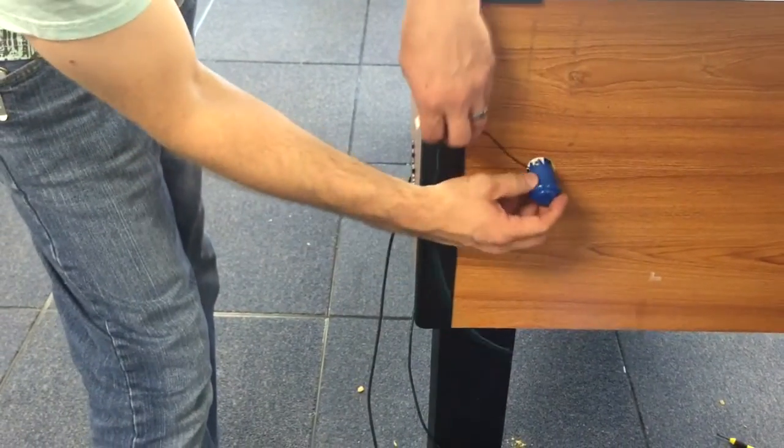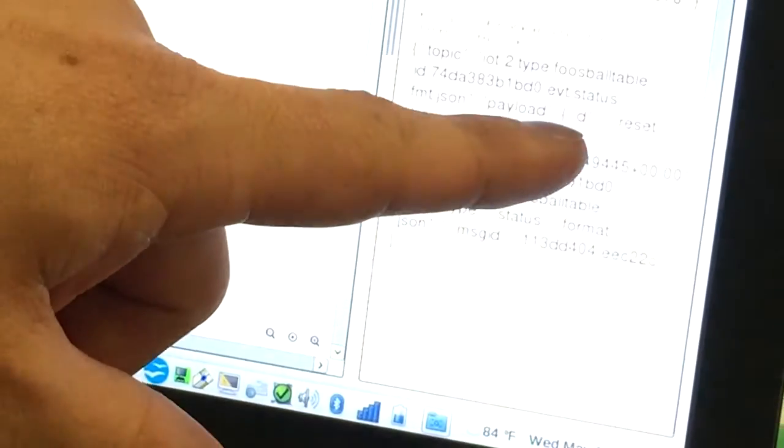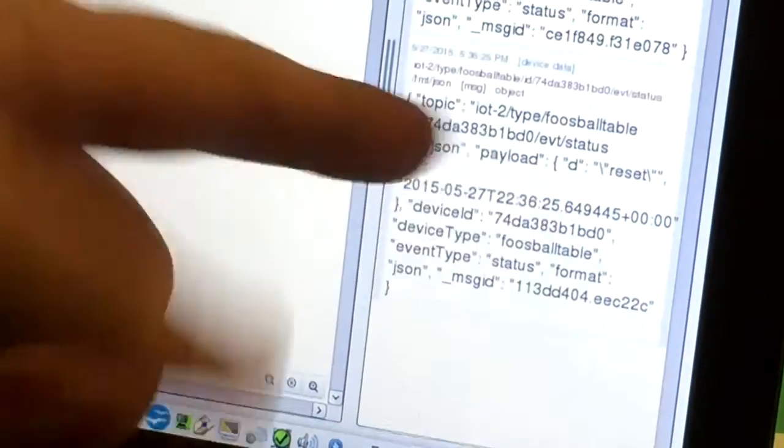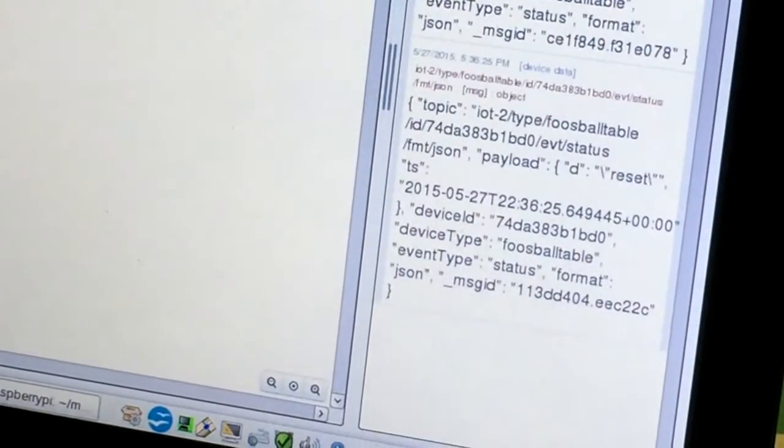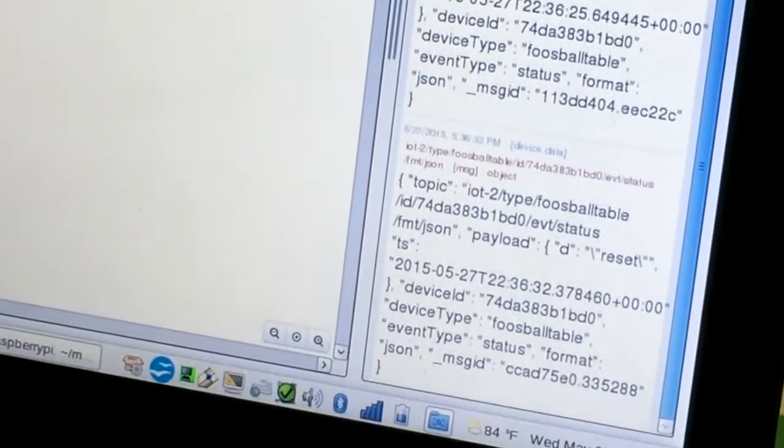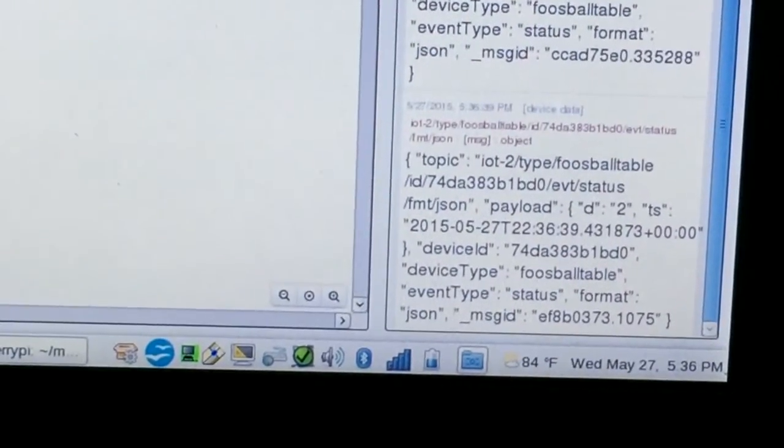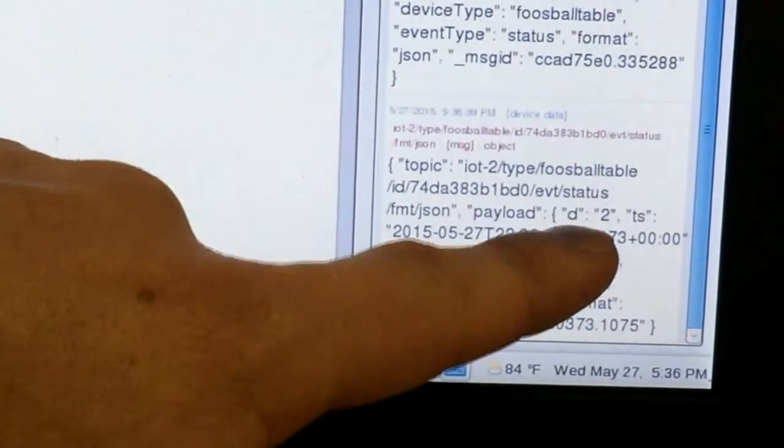So this will actually, yeah. So you can see, when we push the button, we get a JSON coming in with the string reset. Alright. But when we score a goal, there's a ball. You should see a signal come in and it detects a goal on, a score on goal two.